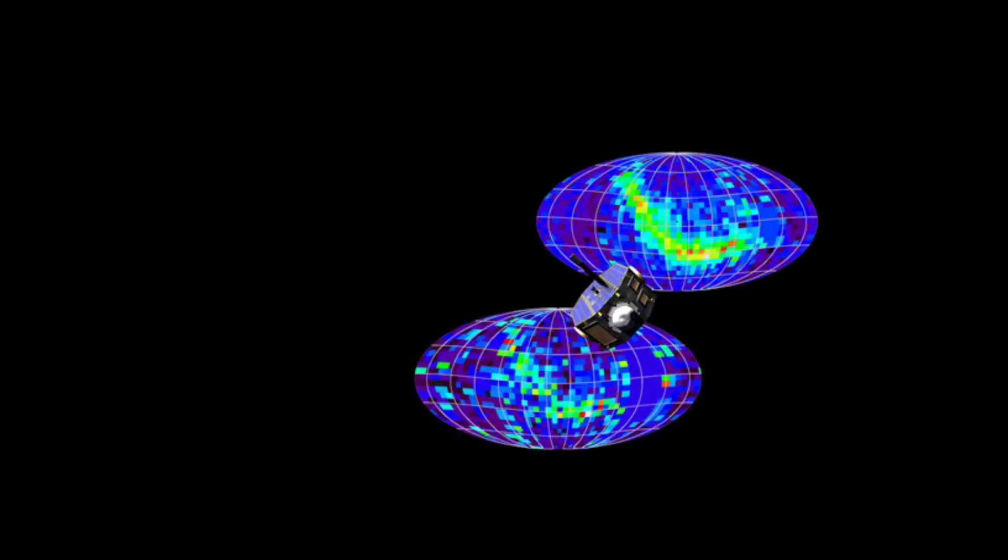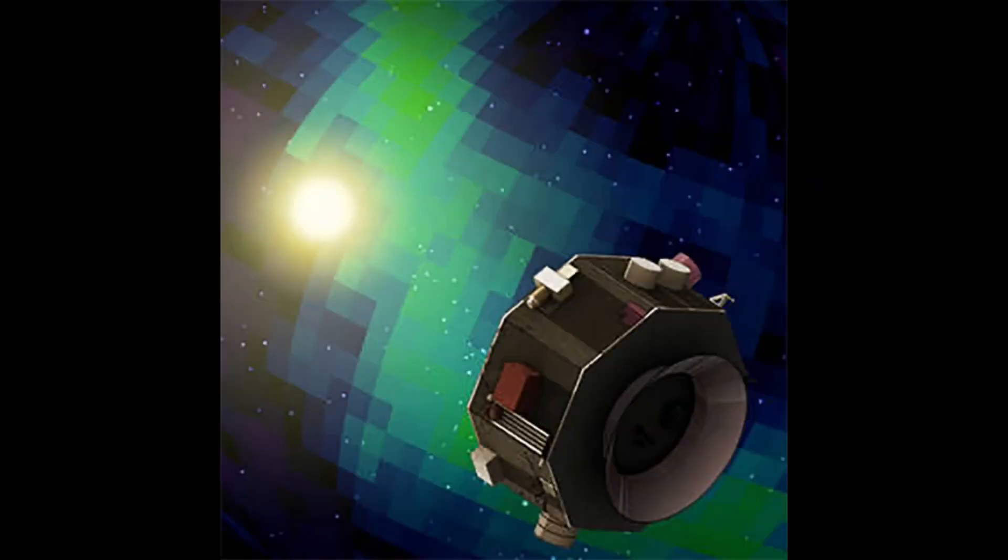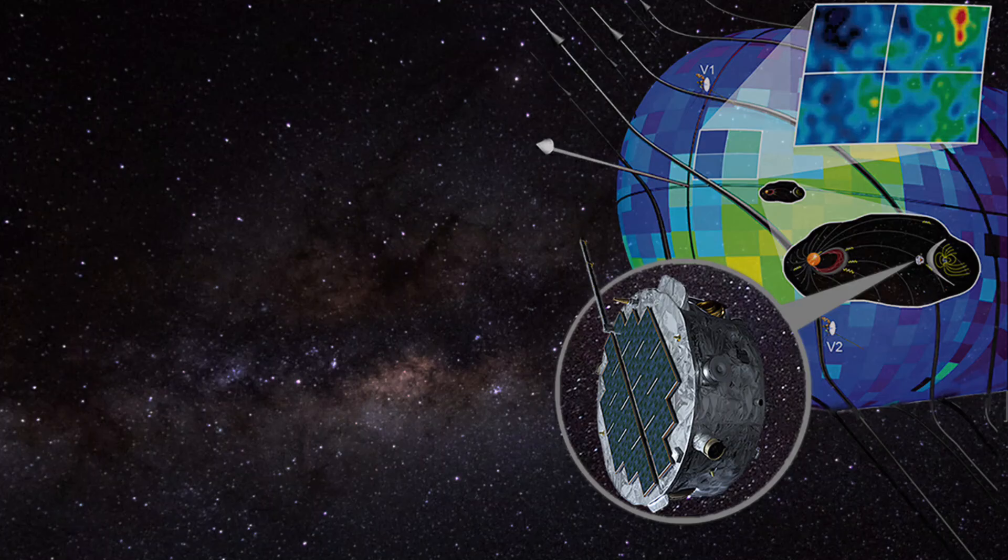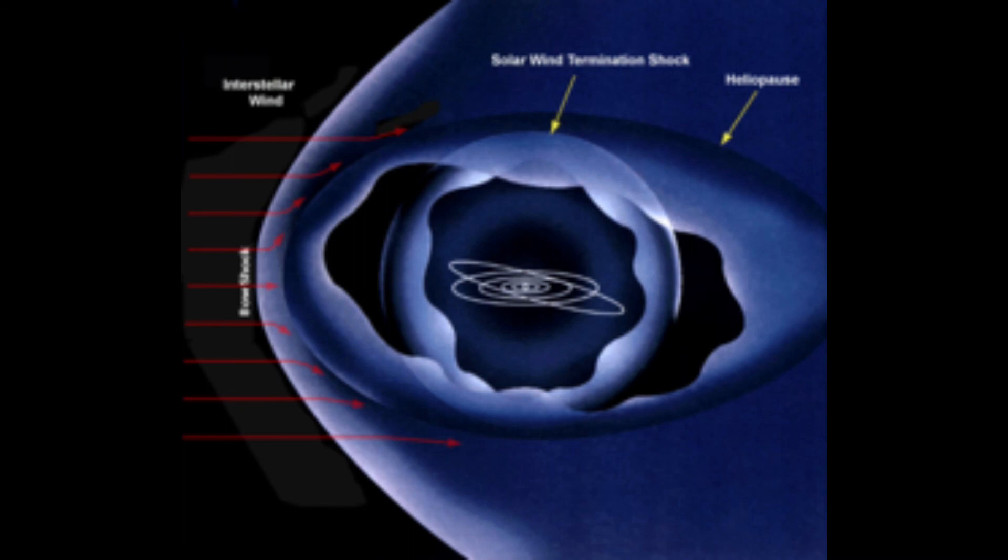The IBEX mission is still going and will continue until at least 2025. The Interstellar Mapping and Acceleration Probe is due to commence in 2025 picking up where IBEX leaves off. The team hopes that both these missions will provide more data to help refine the heliopause's shape.